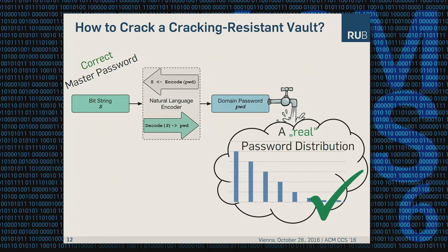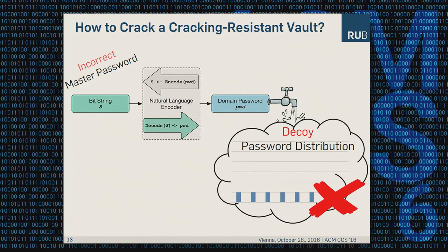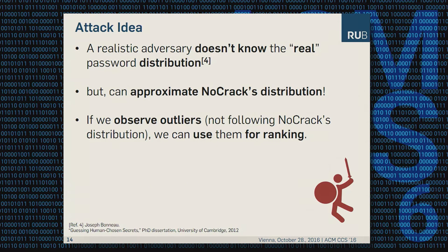A year ago we asked: how can we crack a cracking-resistant password vault? If we use the correct master password, the bit string is decoded and we end up with a domain password that follows a real unknown password distribution. But if we use an incorrect master password, it follows a decoy password distribution. If those distributions are not the same or can be distinguished, we have an attack. Our attack idea is that we can approximate NoCrack's decoy distribution by sampling from it, and if we observe outliers that do not follow NoCrack's distribution, we can use them for ranking.